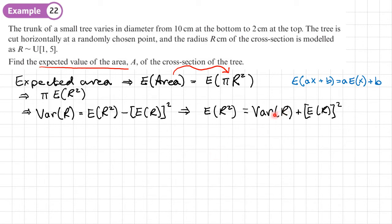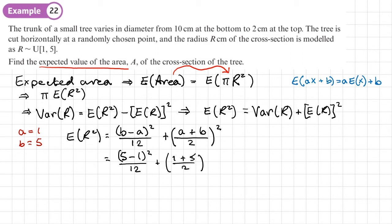So now we need to work out what the variance is and what R is. This is a uniform distribution and the value of A is 1 and the value of B is 5. So E of R squared is going to be equal to the variance, so that's B minus A all squared over 12. And the mean is A plus B all over 2. Now we need to square that because we've got the mean squared in the formula. And that's just a matter of substituting those values. So 5 minus 1 all squared over 12 plus A plus B over 2 all squared. So from there we will get 4 squared over 12, so we'll get 16 over 12 plus 6 over 2, and that's all squared. And that gives us 31 over 3.